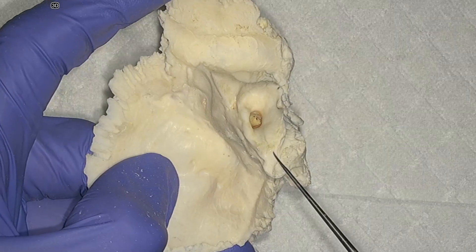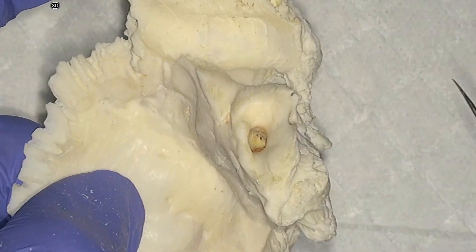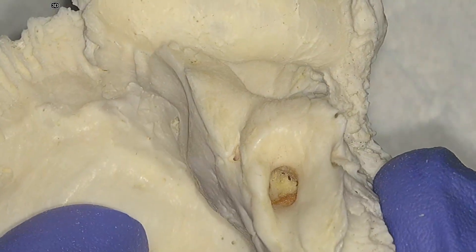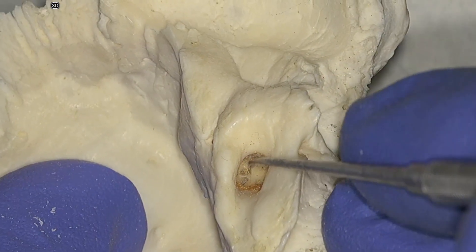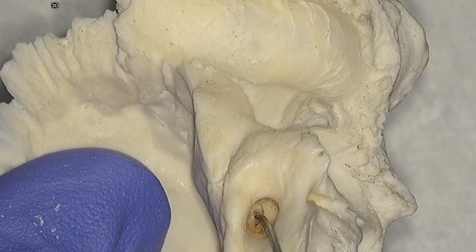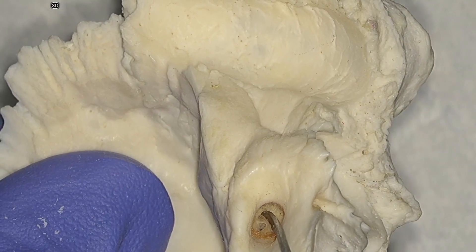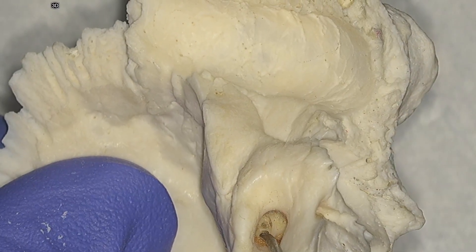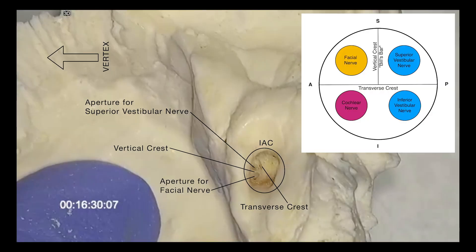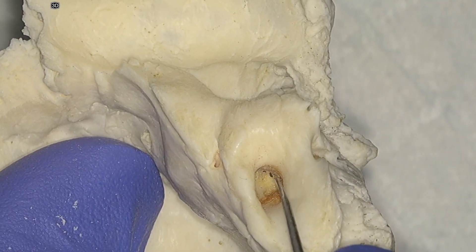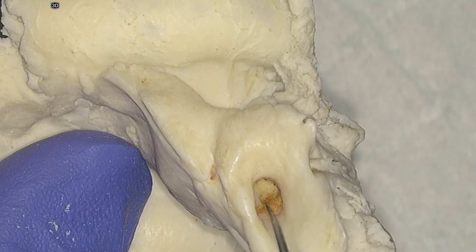Next, we will look into the internal auditory canal. Note that it is oriented with the vertex toward the left side of the screen. We can easily see the transverse crest. The vertical crest, also known as Bill's bar, separates the superior vestibular nerve aperture from the facial nerve aperture. Finally, we have the inferior vestibular nerve and cochlear nerve apertures.